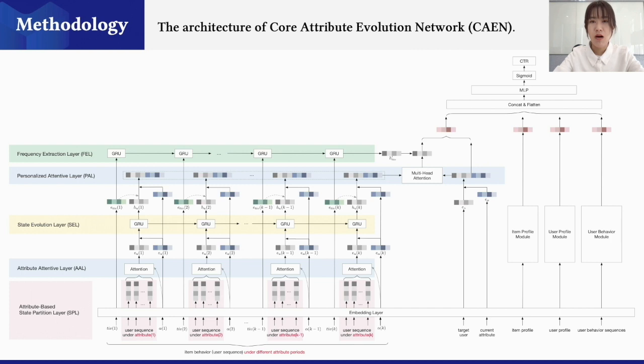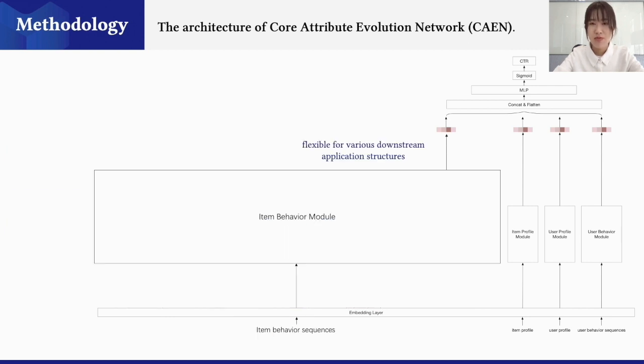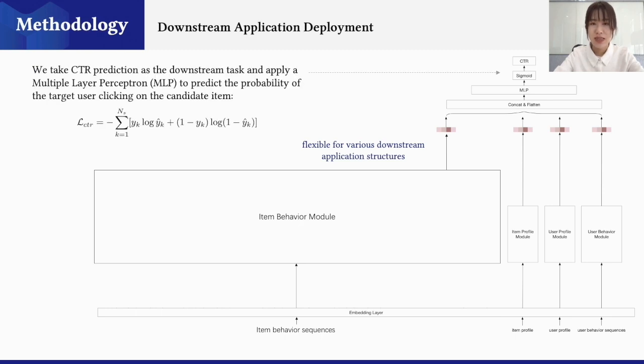Above all, the whole structure of CAEN can be seen as the module of item behavior modeling, with the output vector that can be flexibly concatenated with other modules, and then serves as the inputs of the following decision layer. Here we take CTR prediction as the downstream task, apply a multiple-layer perceptron and a sigmoid activation after CAEN to infer the clicking probability.